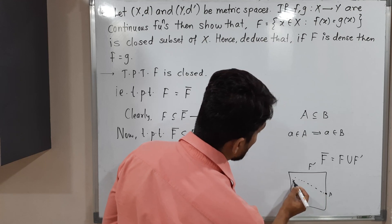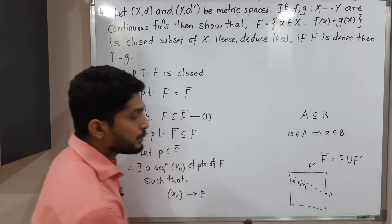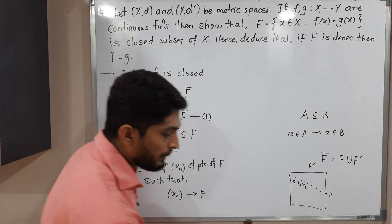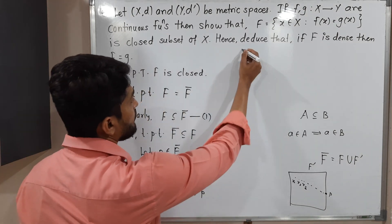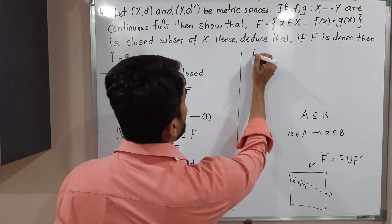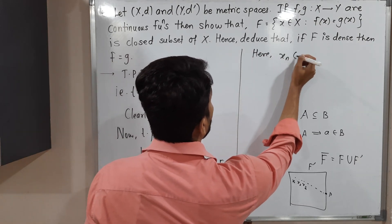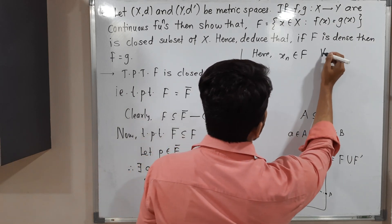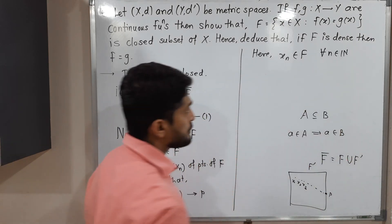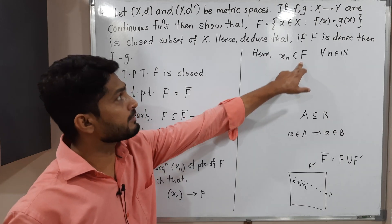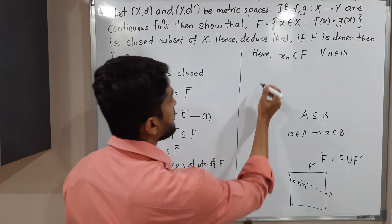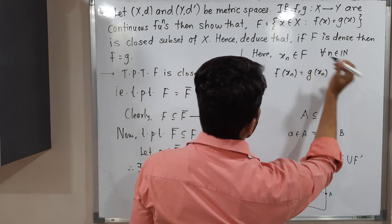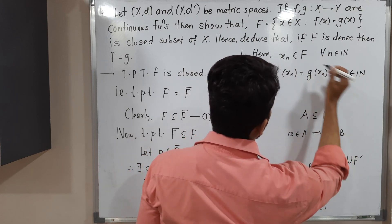Suppose this is the set F̄ and we have some point p in it. Then we get a sequence x₁, x₂, x₃, ... which are elements of F, and that sequence converges to p. Since each xₙ belongs to F, it satisfies the definition of F, which says f(xₙ) = g(xₙ) for all n ∈ ℕ. Let us call this equation (1).